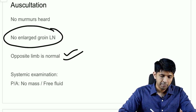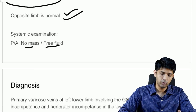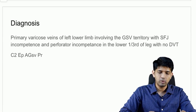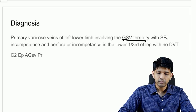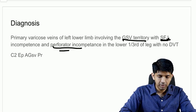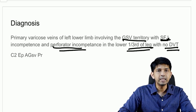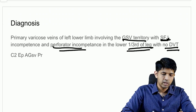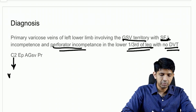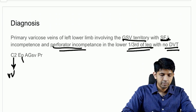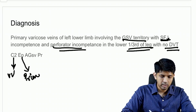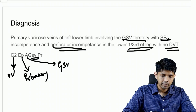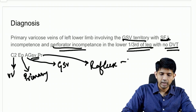The opposite limb is normal with no evidence of varicose veins. On systemic examination of the abdomen, there was no mass or free fluid noted. My diagnosis is primary varicose veins of the left lower limb involving the GSV territory with saphenofemoral junction incompetence and perforator incompetence in the lower one-third of the leg, with no DVT, no varicose ulcer, and no lipodermatosclerosis. CEAP classification: C2 — varicose veins only.